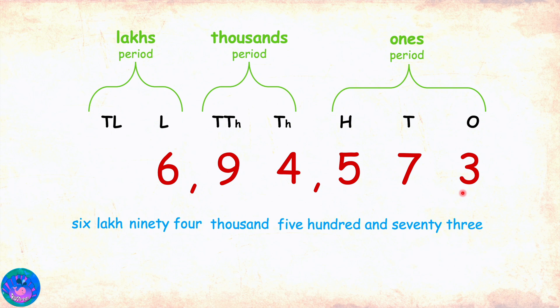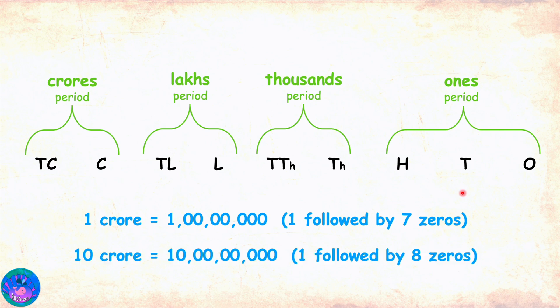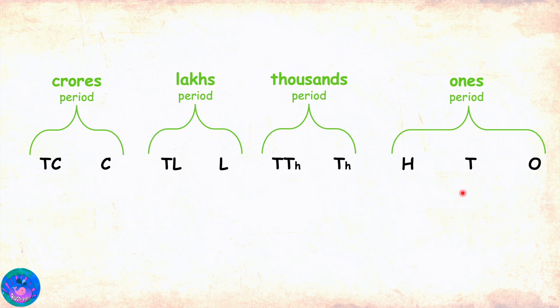Miss R, what comes after the crores period? I was just coming to that. We know that one crore is one followed by seven zeros and ten crores is one followed by eight zeros.